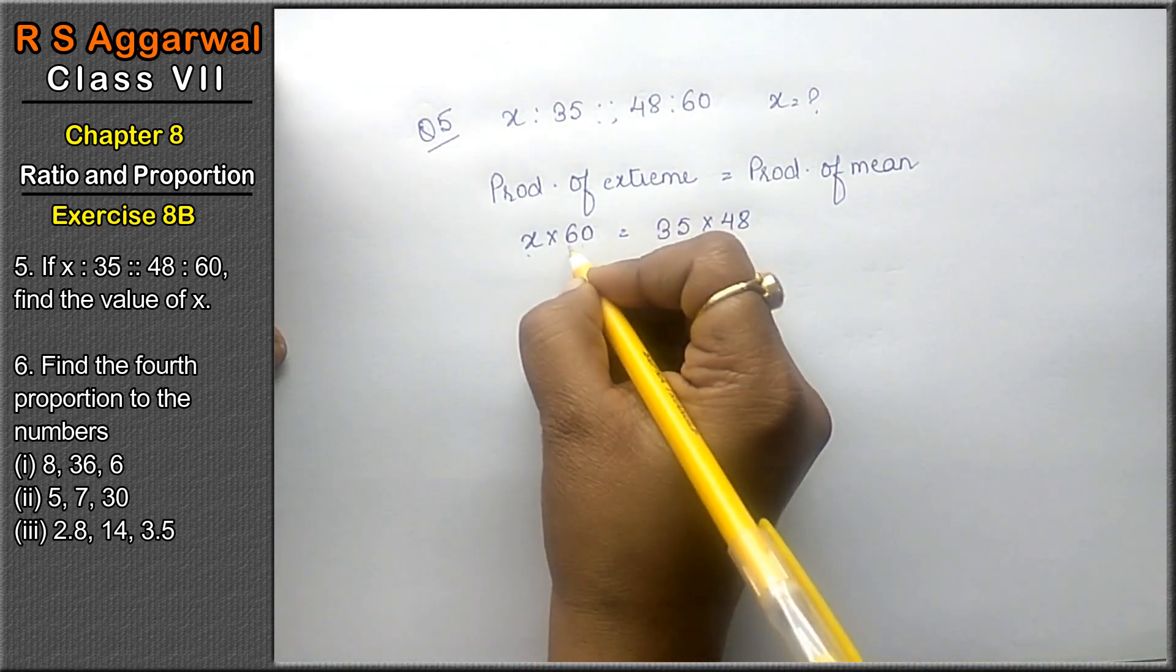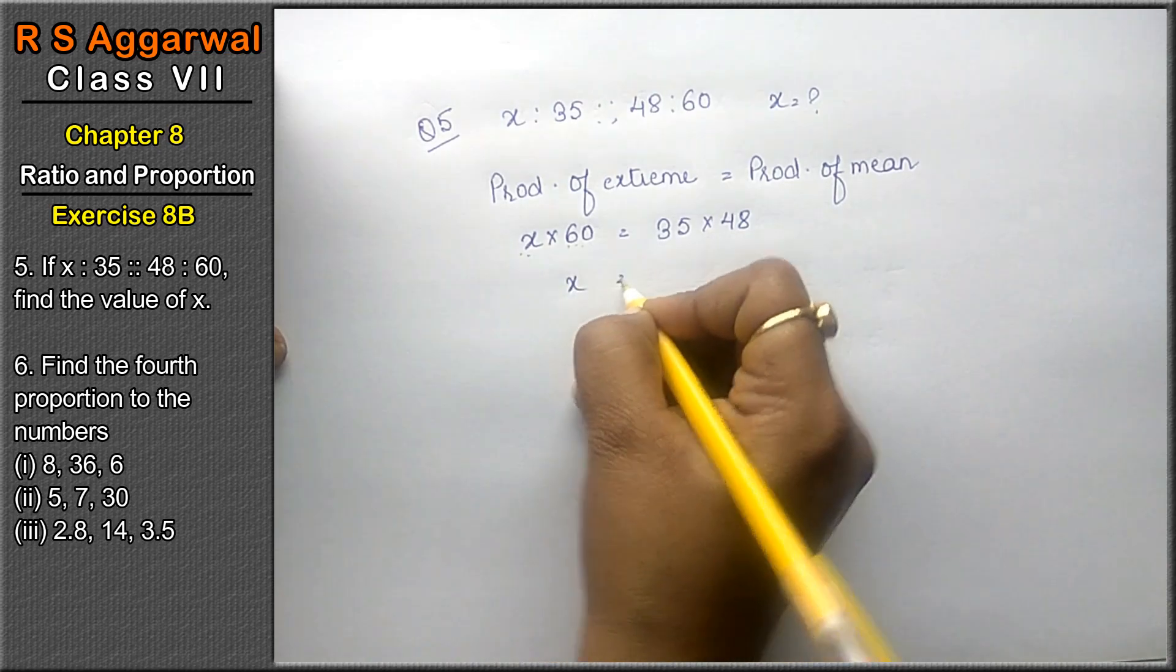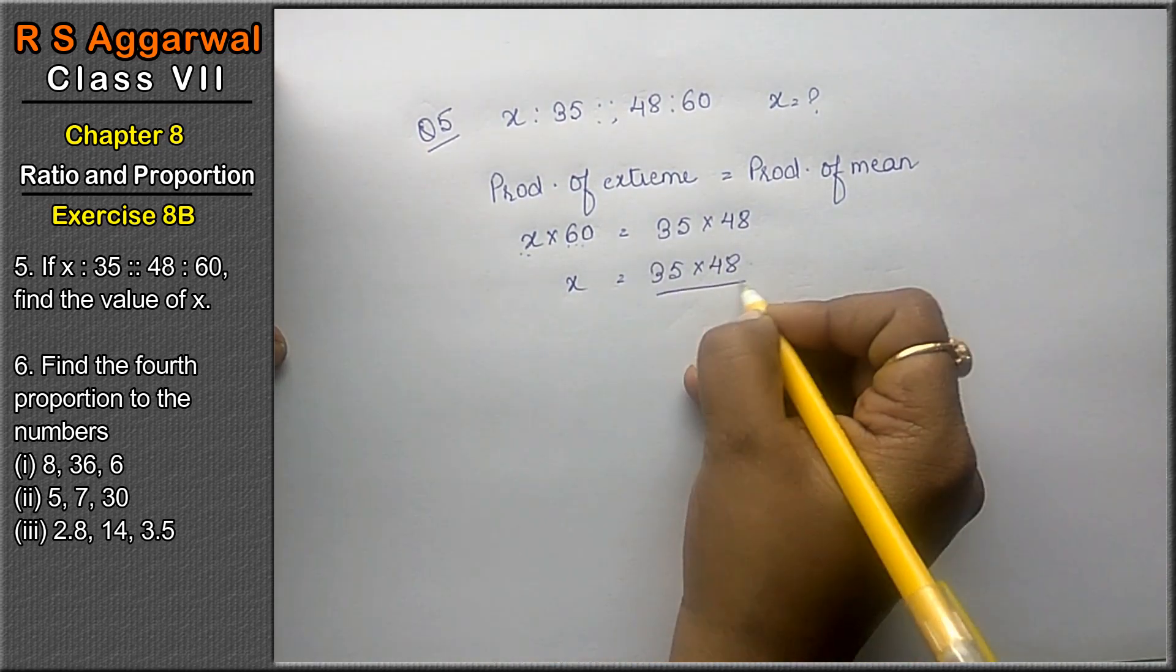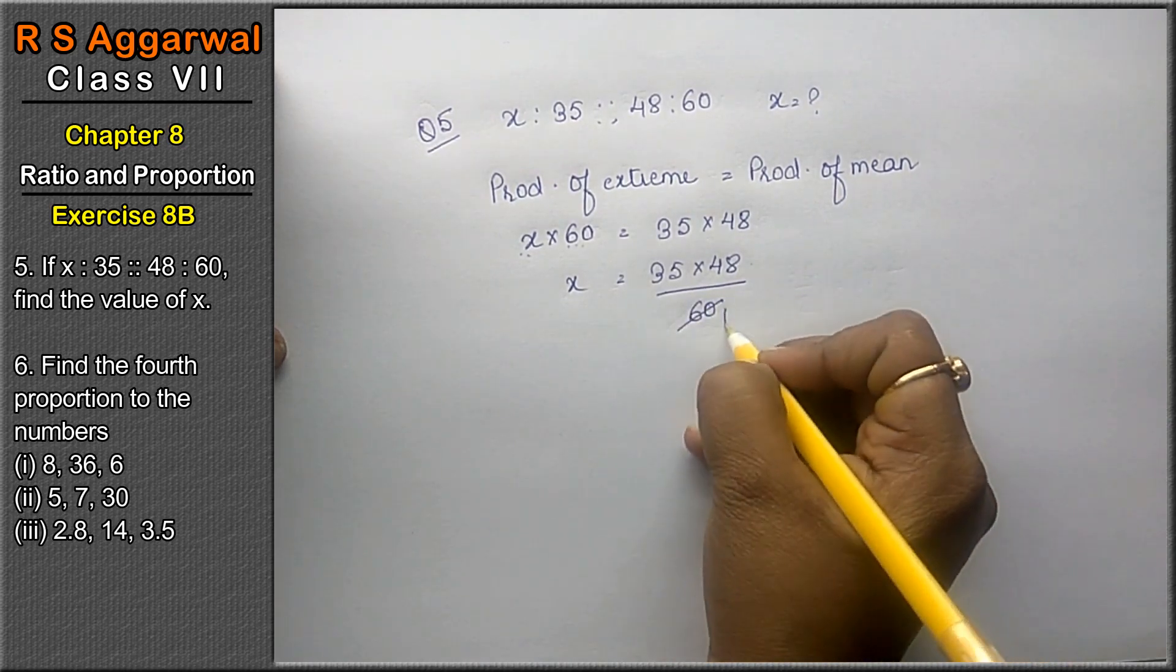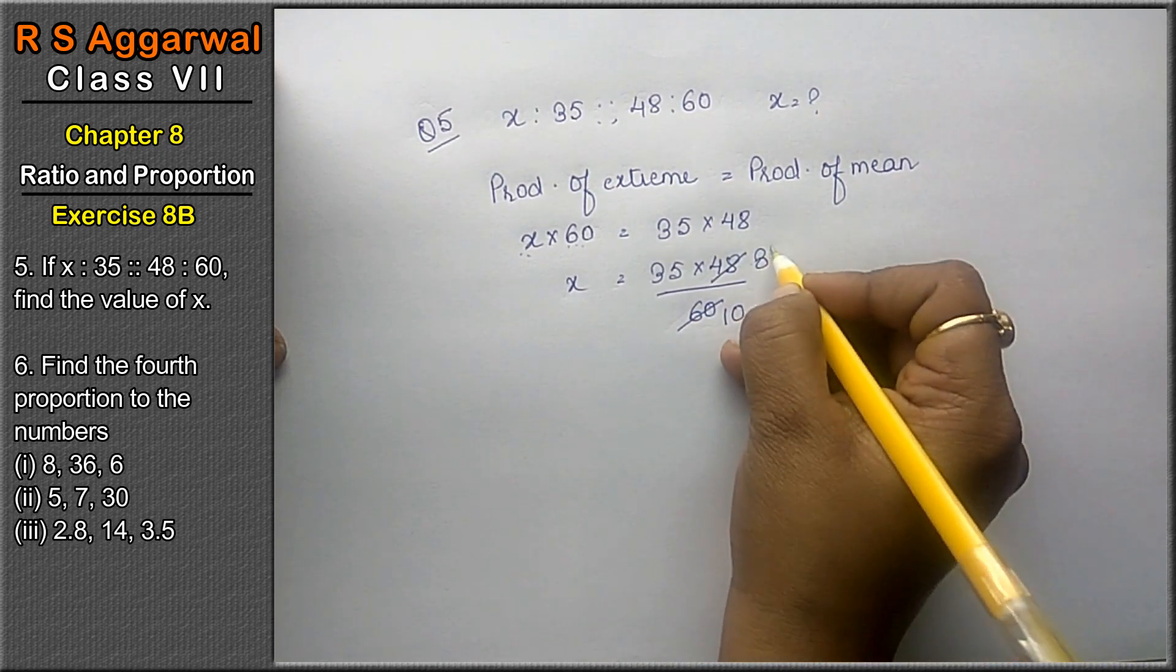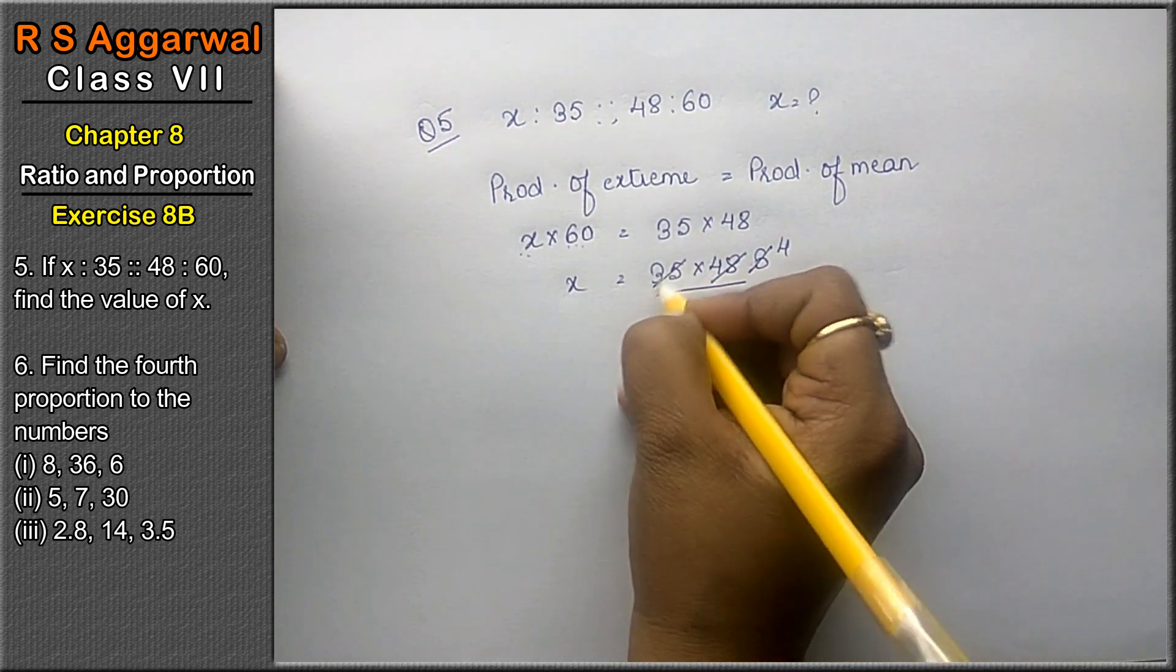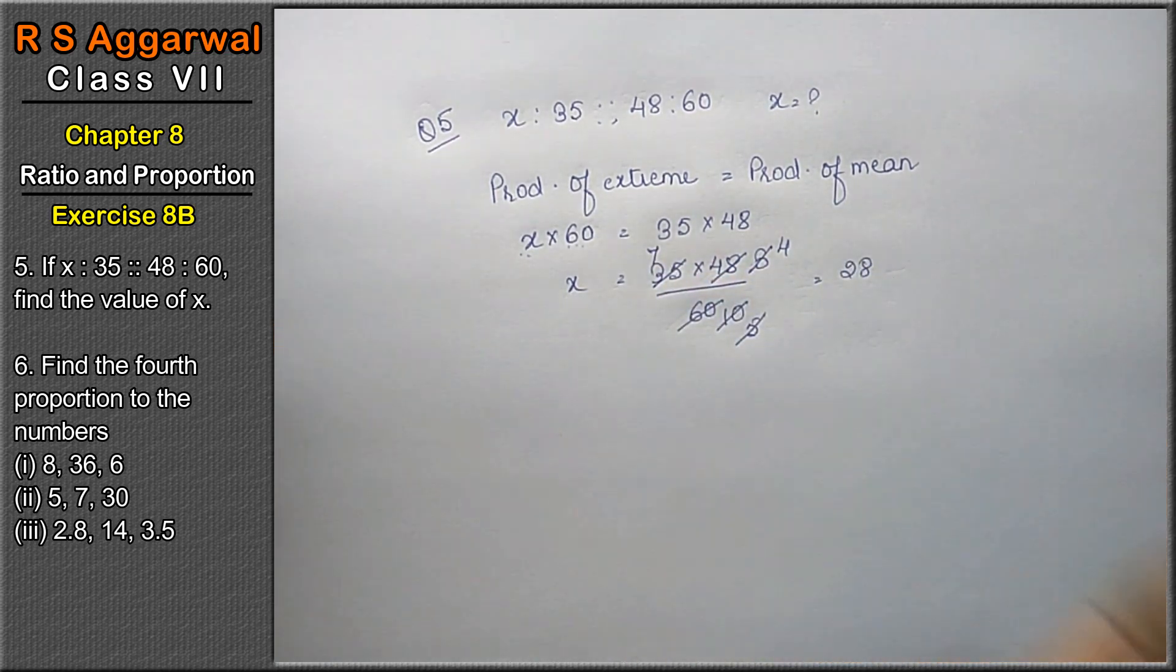Now x as it is, 60 will divide here. 35 into 48 as it is, 60 divide. Now 6 1 is 6, 0 as it is, 6 8 is 48. 2 4 is 8, 2 5 is 10. 5 1 is 5, 5 7 is 35. 28 is the answer.